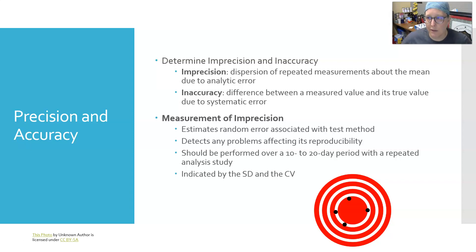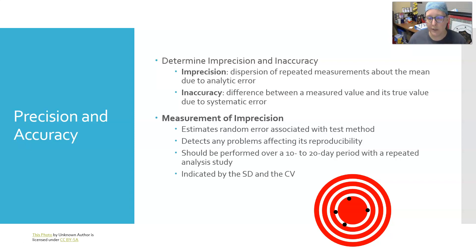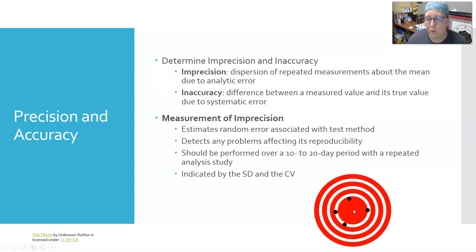This multi-day approach allows you to catch random issues like fluctuations in lab temperature or humidity and operator-to-operator variability. Imprecision is indicated by standard deviation and coefficient of variation. Using a target analogy: if we aim for dead center, a precise and accurate method hits dead center consistently, while imprecision shows scattered points even if they're roughly centered.